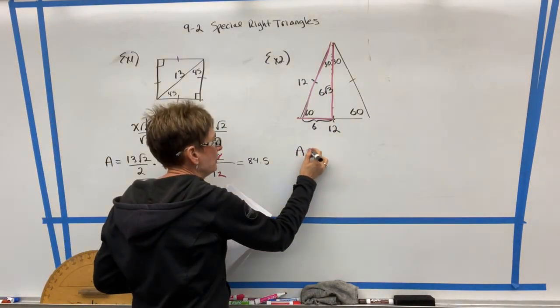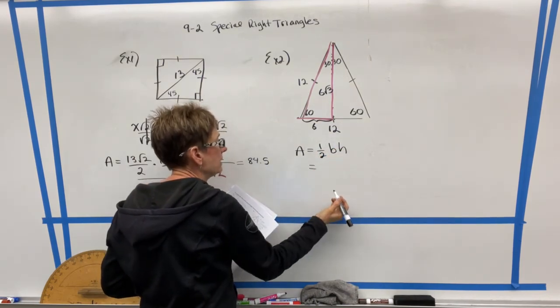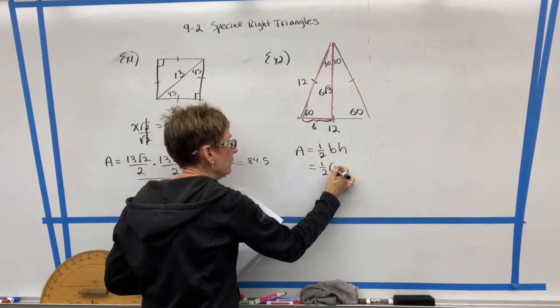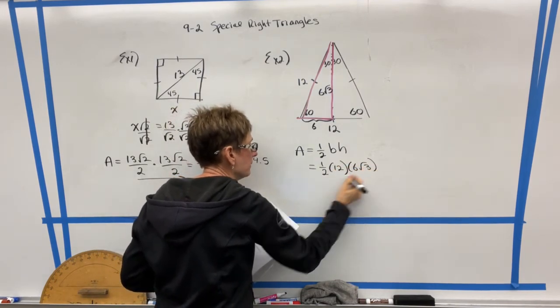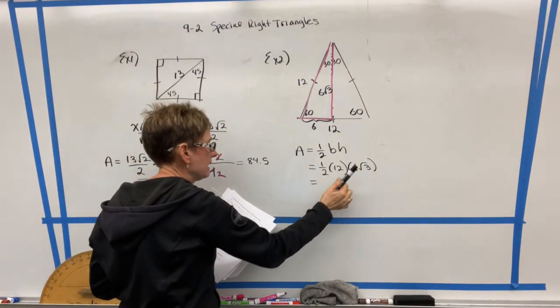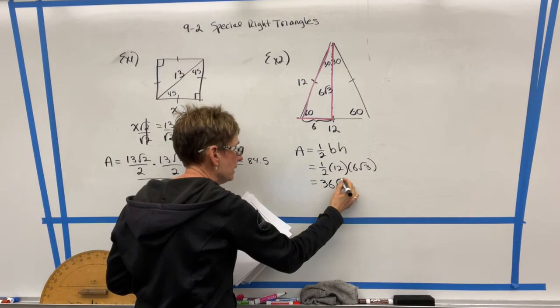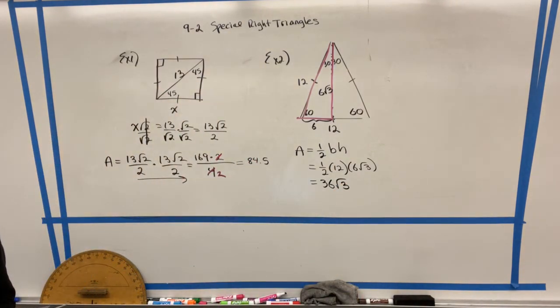Now, again, I have to remember the formula for area of a triangle, one-half the base times the height. So I'm going to take one-half of 12 times the height, which is 6 radical 3. If I take half of 12, that's 6, and 6 times 6 is 36. So the answer here for the area of that triangle would be 36 radical 3.